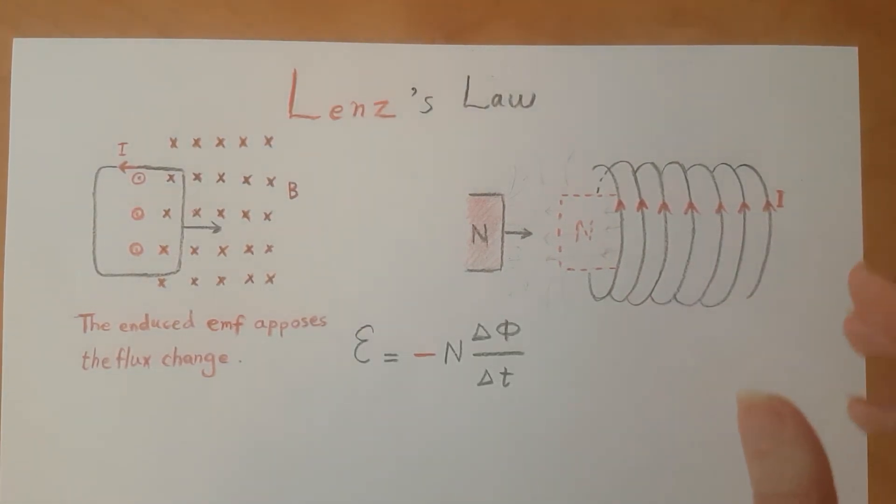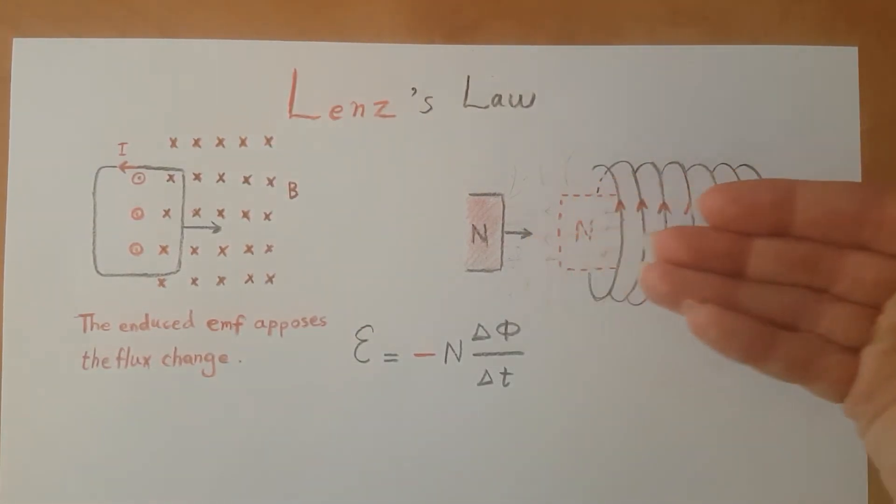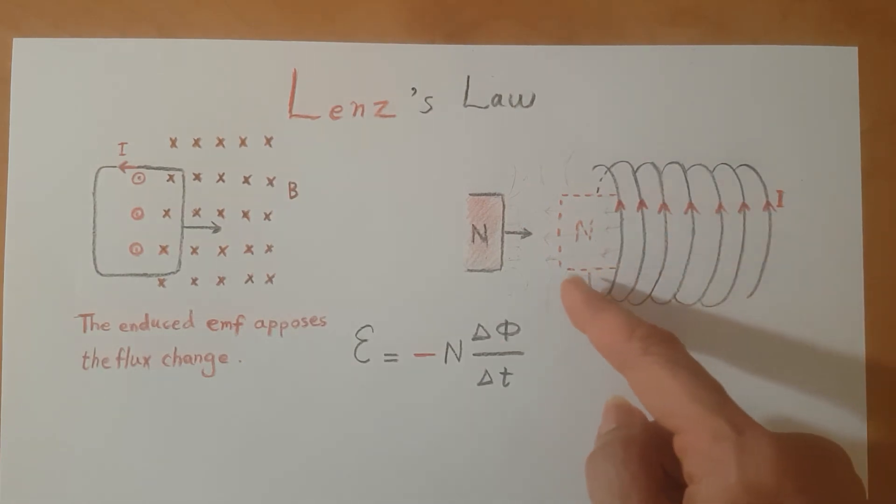So the solenoid creates this way of B's inside it and it's turning to a magnet that is opposing the movement of this outside magnet.